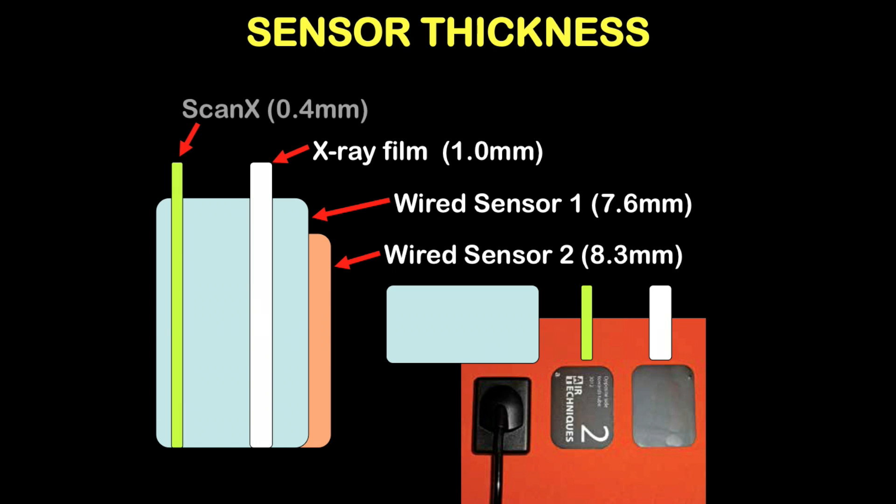All this has to be put into the patient's mouth in between the tongue and the lower arch. The ScanX, including the barrier, is 4 tenths of a millimeter thick. In effect, half as thick as our original analog x-ray film.